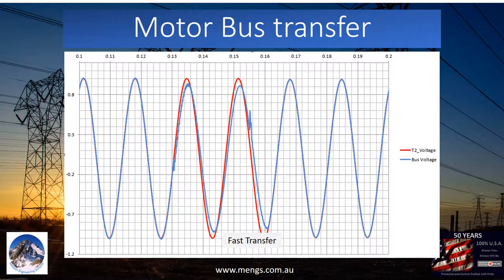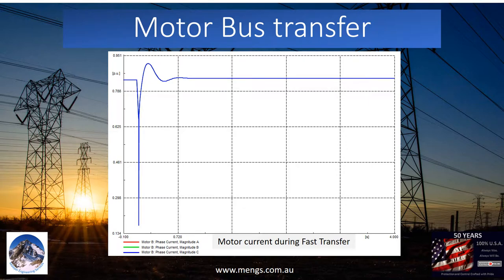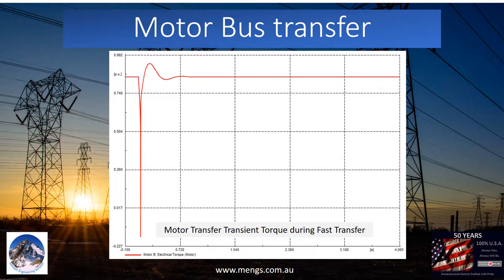In the first few cycles after disconnection of the motor bus from the main source, the motor bus frequency is stable and close to network frequency. If the new source is in sync with the motor bus, the transfer can happen immediately. Having a fast sync check is essential to perform fast transfer; the sync check time should not be more than 10 to 15 milliseconds. In the case of fast transfer, the motor current won't change much — the re-acceleration current is approximately nominal current. The transfer transient torque is low, as the new source connects with very marginal phase angle difference.